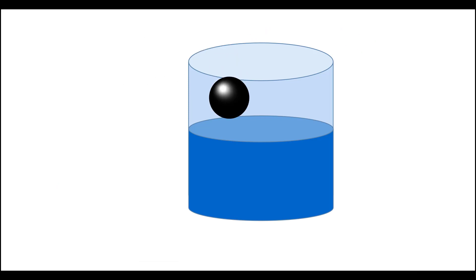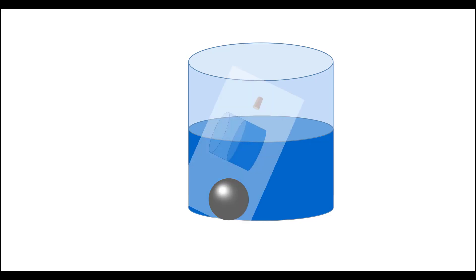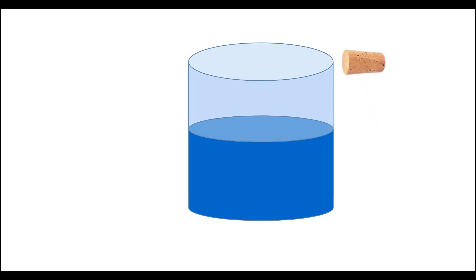Consider an iron ball. What will happen when you put the iron ball into the water? It will sink into the water. Now drop the cork into the water. What will you observe? The cork will float on the water.